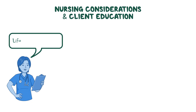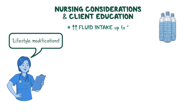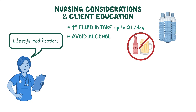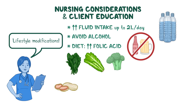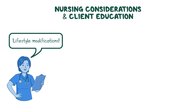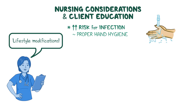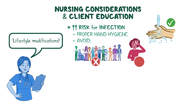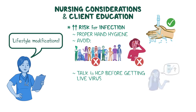Discuss important lifestyle modifications your client should make while taking methotrexate. Encourage them to increase their fluid intake up to two liters per day and to avoid consuming alcohol. Also, stress the importance of including in their diet foods high in folic acid, such as spinach, romaine lettuce, broccoli, peanuts, oranges, and whole grains, and to take the prescribed folic acid supplement daily. Explain that they may be at a higher risk for infection while taking methotrexate, and review proper hand hygiene techniques. Let them know they should avoid large crowds and people with infections, and talk to their healthcare provider before getting live virus vaccines.